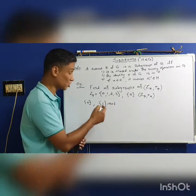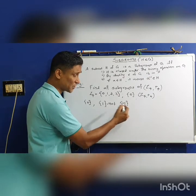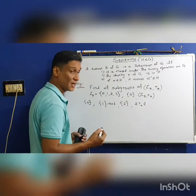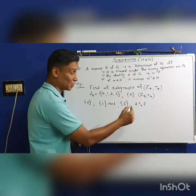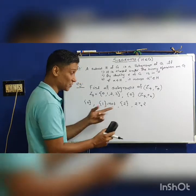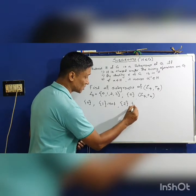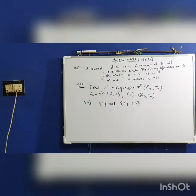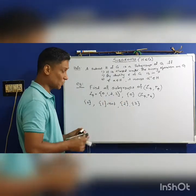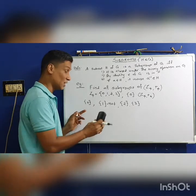The singleton set {1}: 1 plus 1 is 2, it is not a member, so it is not closed. The singleton set {2}: 2 +4 2 equals 0, so 2 is not closed under the operation. The singleton set {3} is also not closed under +4. The singleton set {0} with the identity element is a subgroup.